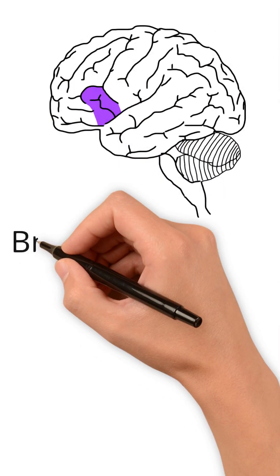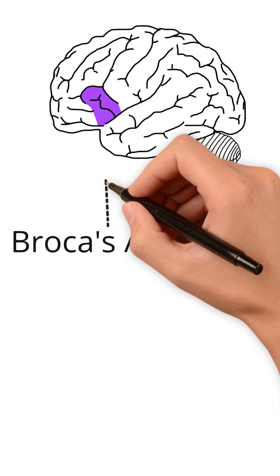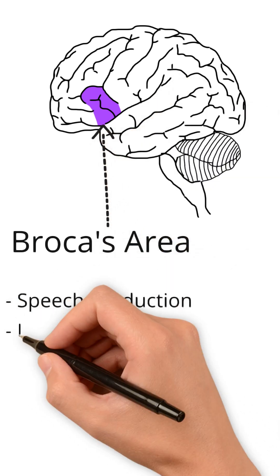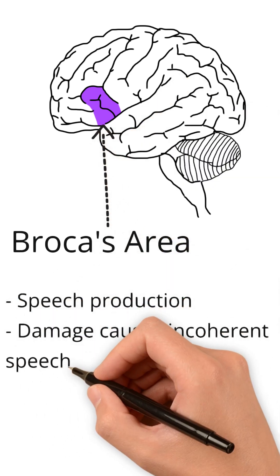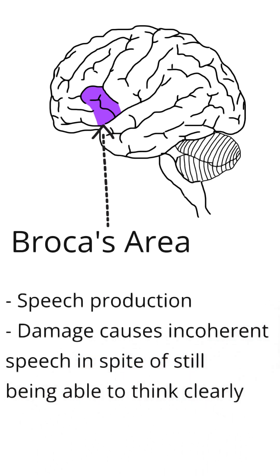The last region we'll be going over is Broca's area. Damage to this area of the brain results in individuals being fully capable of thinking about what they want to say, but lacking the ability to actually produce the motor instructions needed to do so, causing an inability to produce coherent speech.